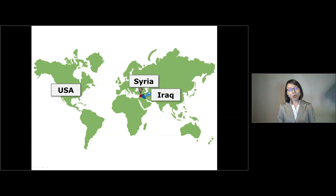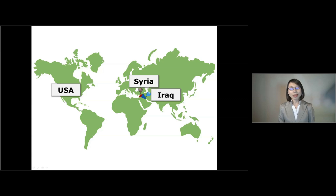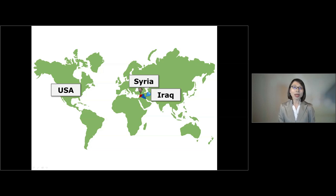Going back to the initial story, the US-led airstrike could in principle violate Article 2(4), the prohibition of the use of force. But there are two exceptions to Article 2(4): one is self-defense under Article 51 of the UN Charter, and the other is military enforcement measures under Chapter 7 of the UN Charter. In the next clip, I'd like to talk about the first exception: self-defense.